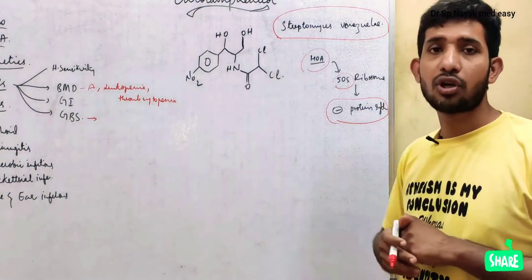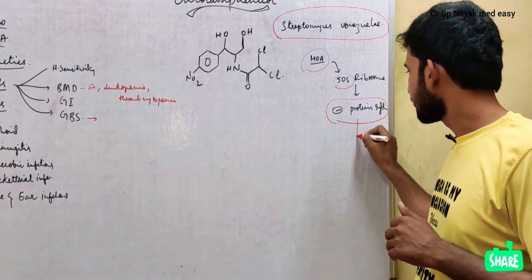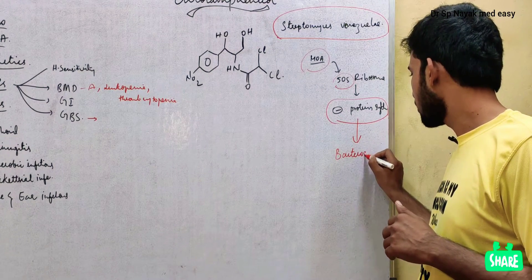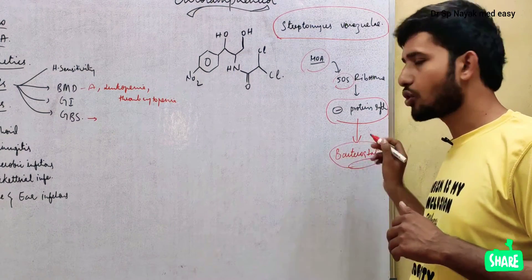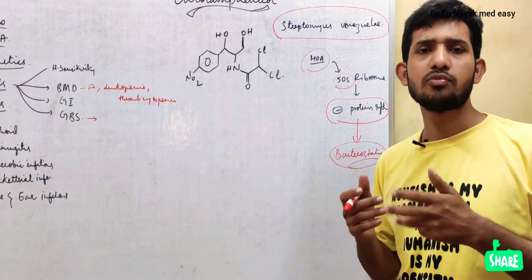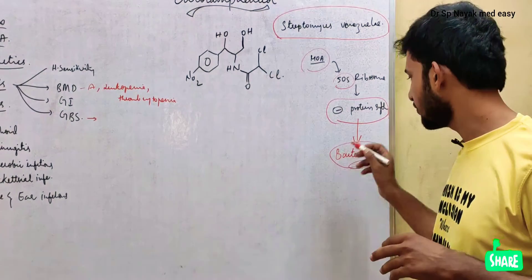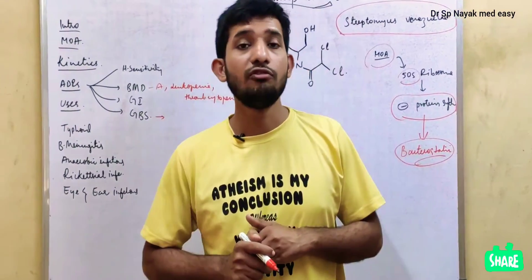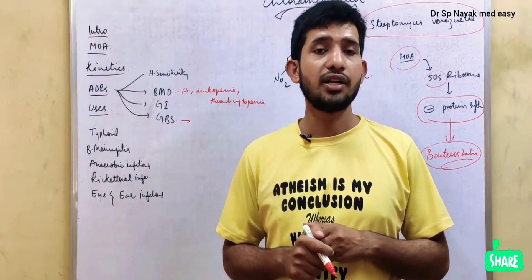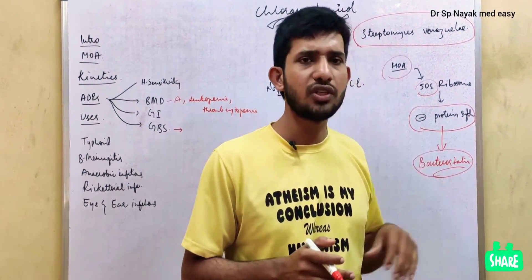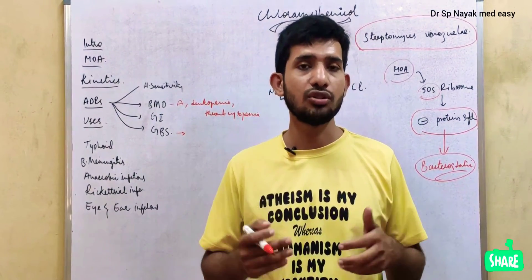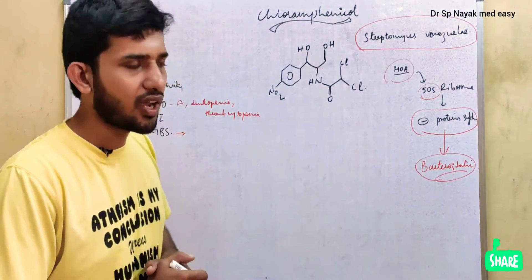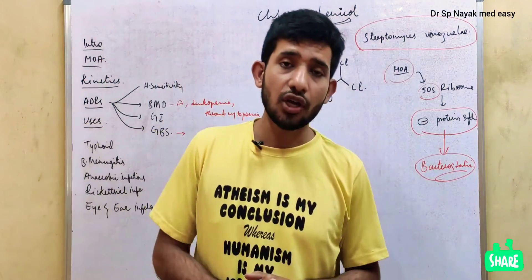By inhibiting protein synthesis, it shows bacteriostatic property — it stops the growth and multiplication of bacteria. That is the reason we call it bacteriostatic. In some cases, in higher doses, the same chloramphenicol will also have bactericidal property. In normal doses it acts like a bacteriostatic agent, and in higher doses it acts like a bactericidal agent. So this is the mode of action of chloramphenicol.